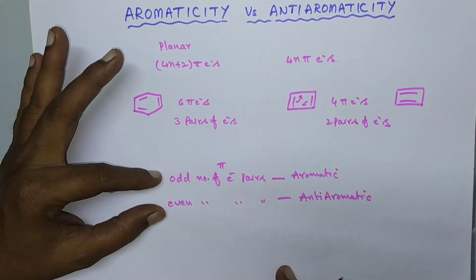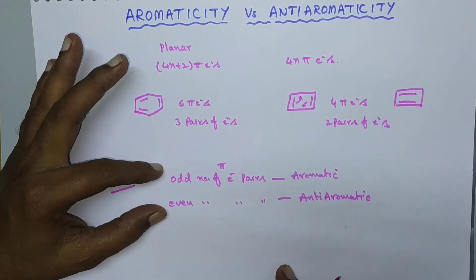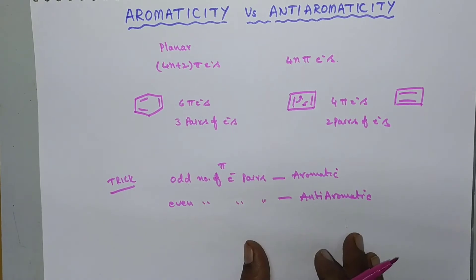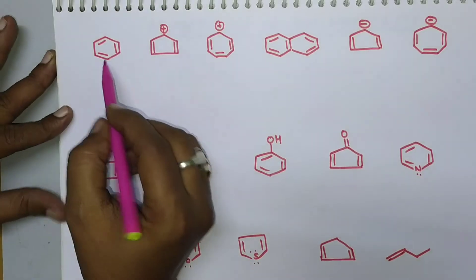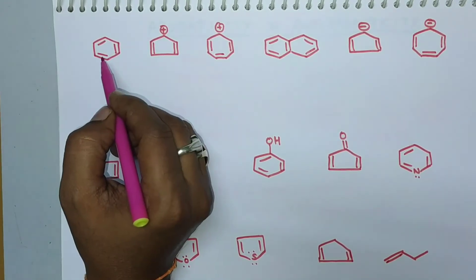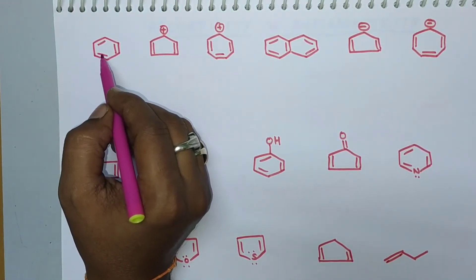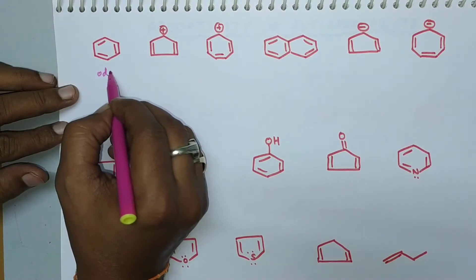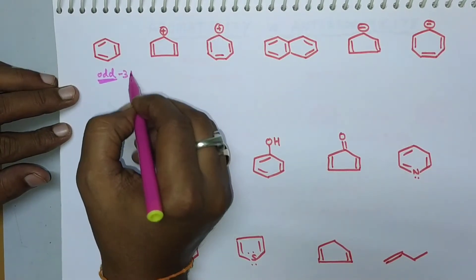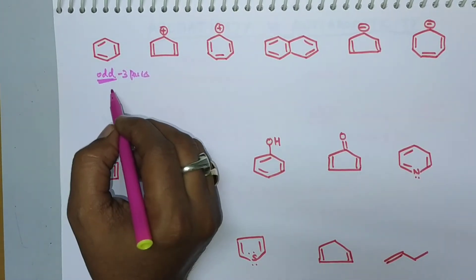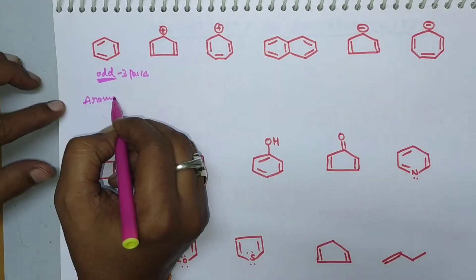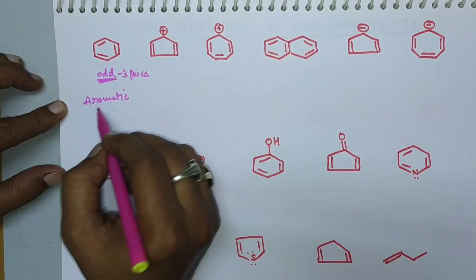Let us look at some examples. Benzene consists of three π bonds, meaning three pairs of electrons — that is an odd number of electron pairs. So benzene is an aromatic compound, which we already know well.